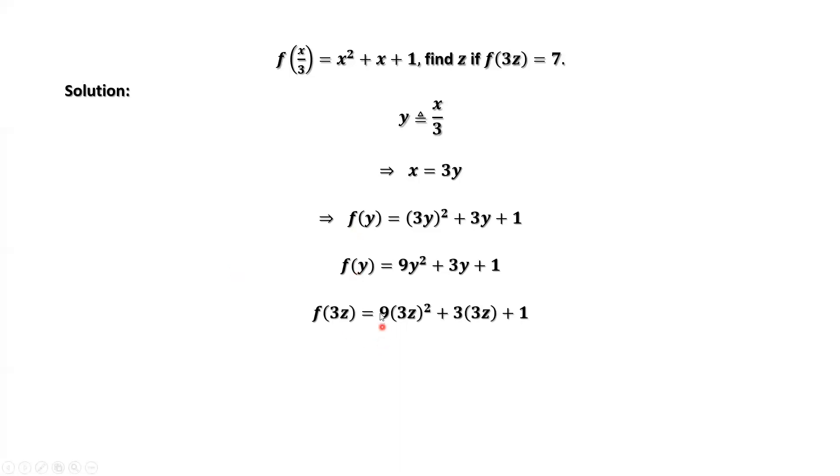We simplify the right-hand side. This implies f of 3z equals 81z squared plus 9z plus 1.